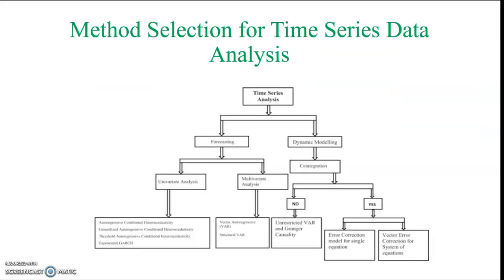This is the diagram for method selection for time series data analysis. In time series data analysis our aim may either be forecasting or we may be estimating dynamic modeling. So if our aim is to forecast then we may either have univariate analysis or multivariate analysis.